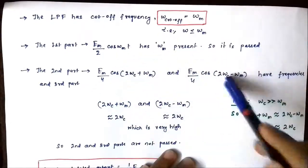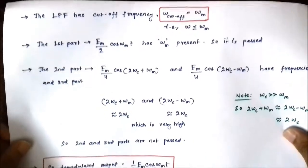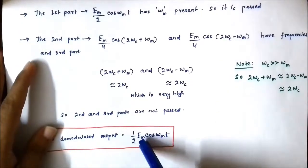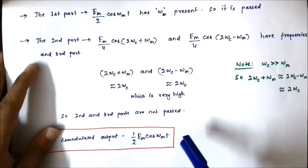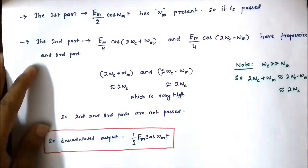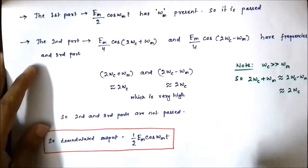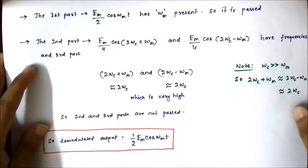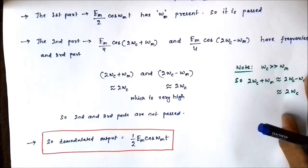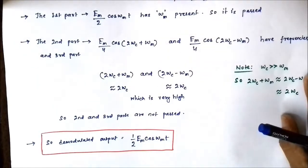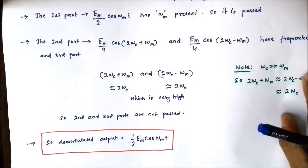The final demodulated output through the low pass filter is (Em/2)·cos(ωmt), which is the required message signal containing the necessary data or information transmitted from the sender to the receiver. This is the general principle of demodulation of a message signal from a DSBSC amplitude modulated signal, using a local oscillator, a multiplier, and a low pass filter with a sharp cutoff frequency.